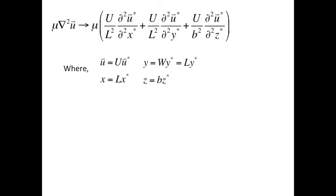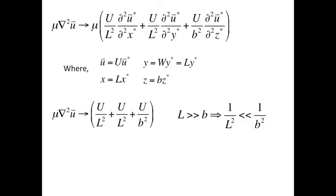Now we're going to look at the viscous terms and non-dimensionalize them. We know that L is much, much greater than B, therefore 1 over L squared is much, much less than 1 over B squared. Because of this, we can ignore the x and y components in the viscous terms. This gives us the equation in the top left corner.